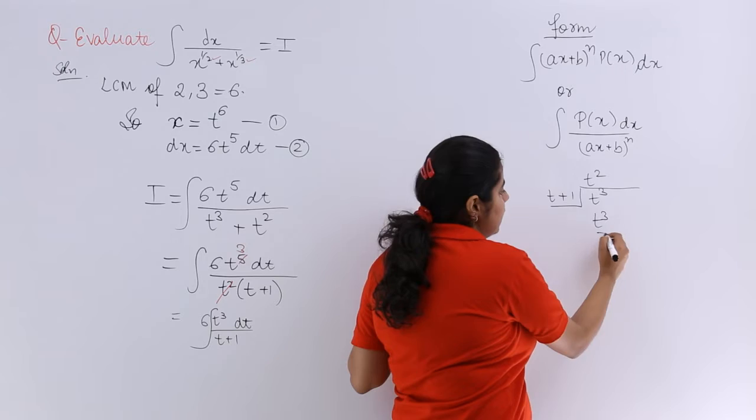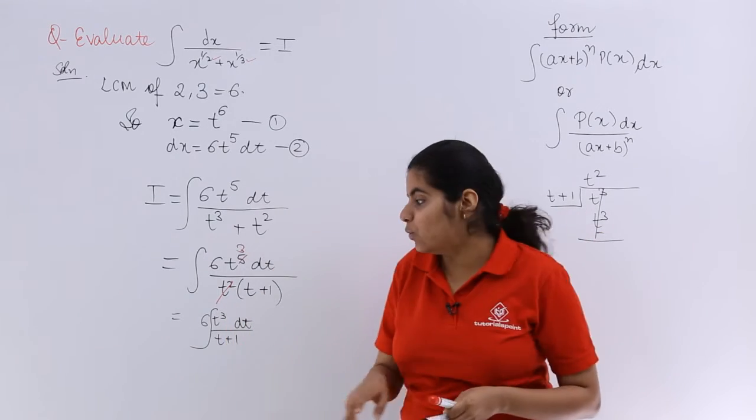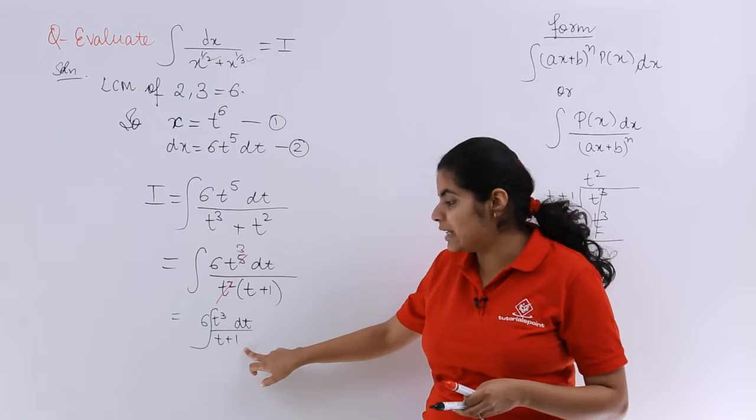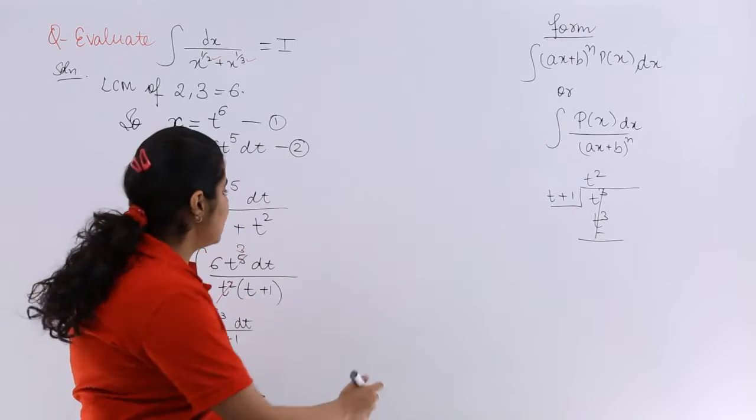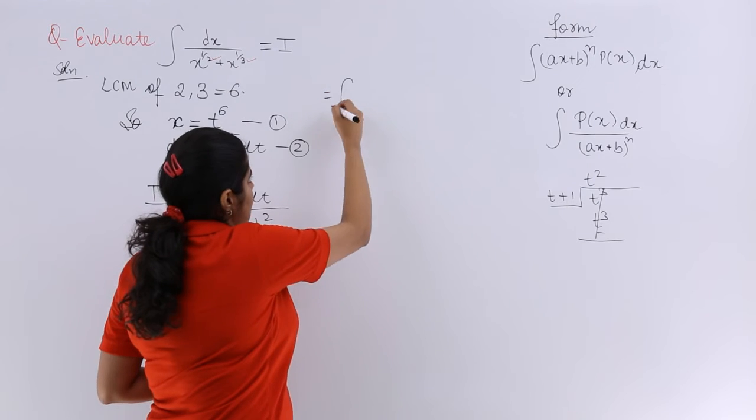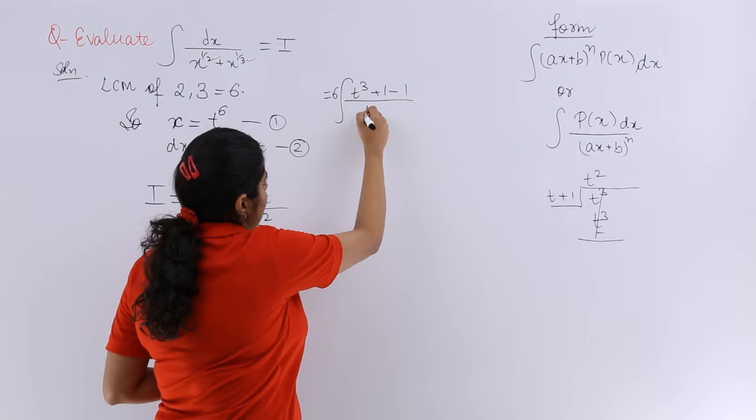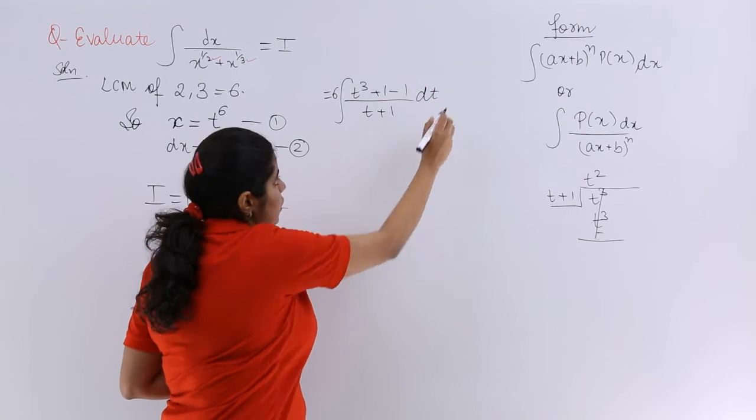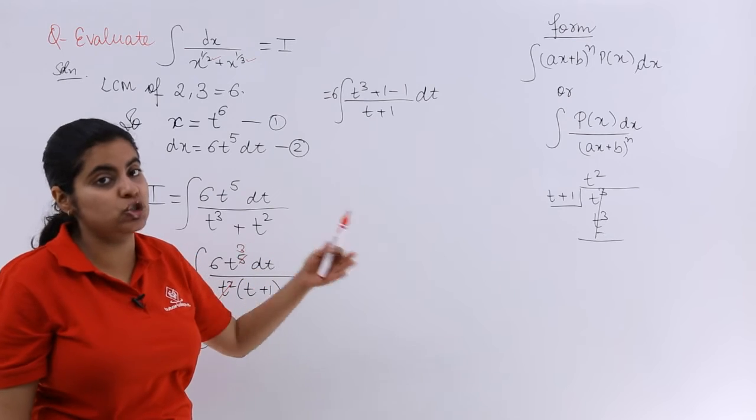So it is t cube, then it is minus, then this cancels away. Right? And I know that this would not benefit until and unless I treat this 1. So what I do is, for that, in the next step, I have 6 although outside, I make it t cube plus minus 1 upon t plus 1 dt. Just for the sake of understanding that I need to solve it further.